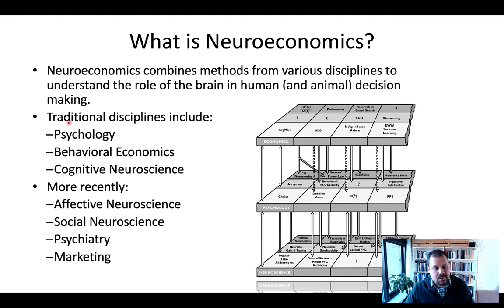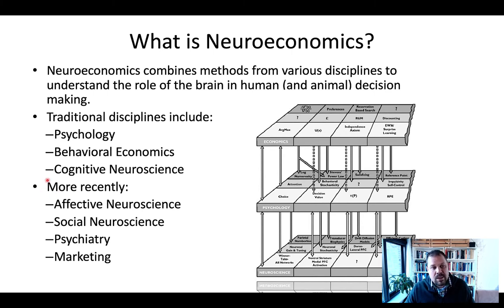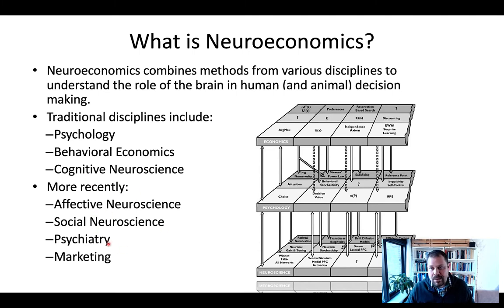So neuroeconomics is made up of three core disciplines — psychology, behavioral economics or economics in general, and cognitive neuroscience — but more recently there have been influences from, and it has influenced, different disciplines. And this list is obviously expanding.